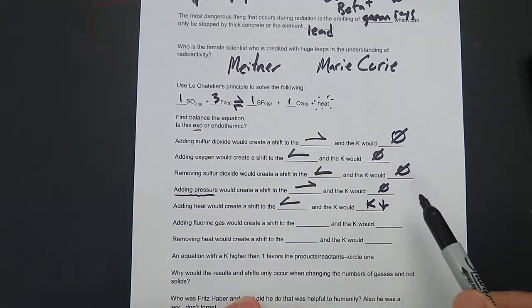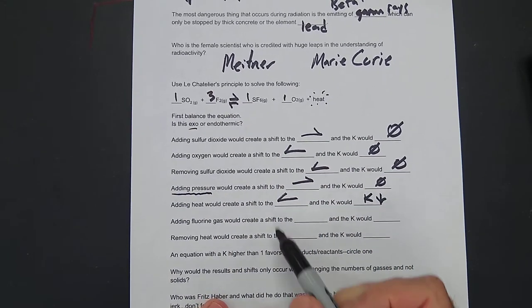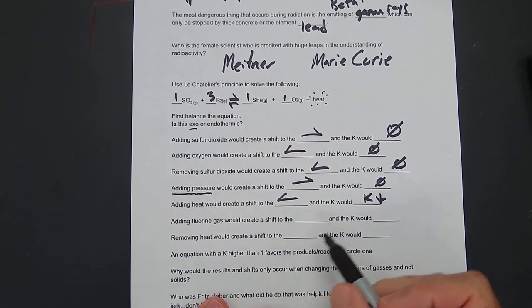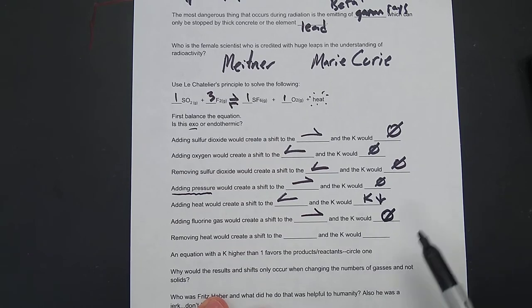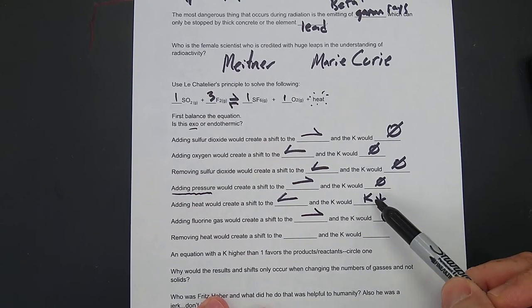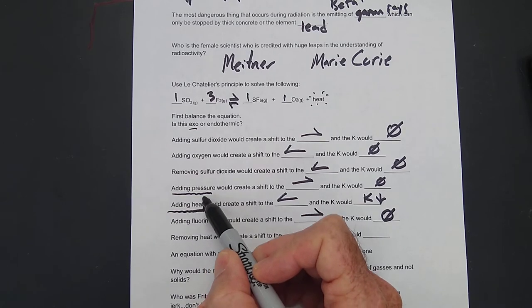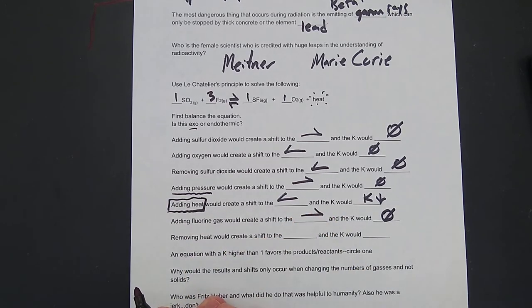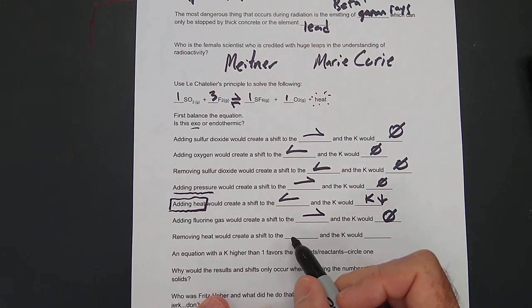Now, a shift to the left means the K goes down. A shift to the right means the K goes up. Adding fluorine gas would create a shift to the right. And the K would not change. Now you're like, Mr. Perkins, you just said the K would change. The only thing that changes the K, people, is heat and temperature.